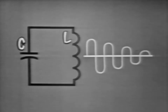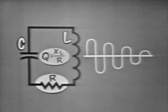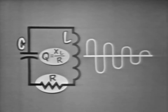Now, we'll represent this resistance here. The amount of internal resistance will determine the quality of the circuit. And you should recall that the Q of a coil is equal to X of L over R. Thus, the higher the Q, the longer the circuit will oscillate because there's less energy dissipated in the circuit.